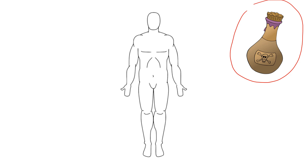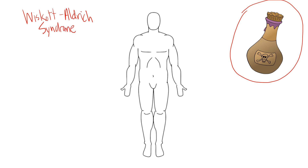You may be wondering why I have some sort of vial of something indicating it's poisonous. With the title Wiskott-Aldrich Syndrome, notice that 'Wiskott' sounds like 'whiskey' — that's going to be our mnemonic for remembering all the parts of this particular disease.